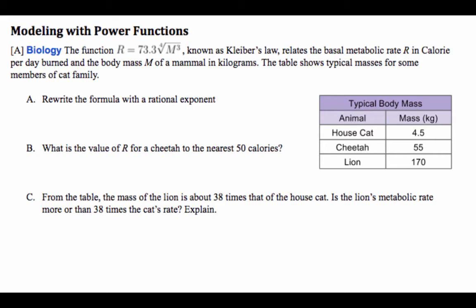Alright, let's look at the modeling with power functions. There's this function, R. It's known as Kleiber's Law. It relates to the metabolic rate of R in calories per day burn relative to the mass of the mammal in kilograms. So this right here shows a typical member of a cat family.